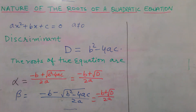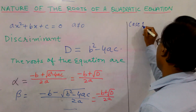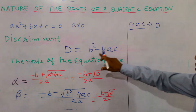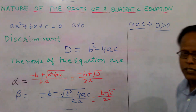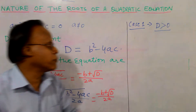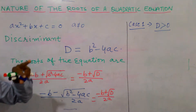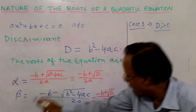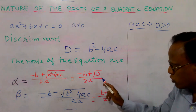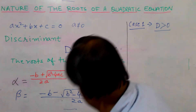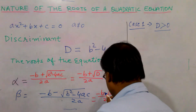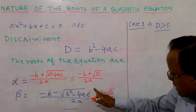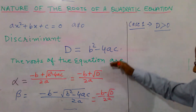Three possibilities arise. Case 1: if the value of capital D — the discriminant, meaning b² - 4ac — is greater than 0, it is positive. So we can easily calculate the square root of a positive number. The roots are: alpha = (-b + √D) / 2a and beta = (-b - √D) / 2a. One takes the plus sign, the other takes the minus sign.